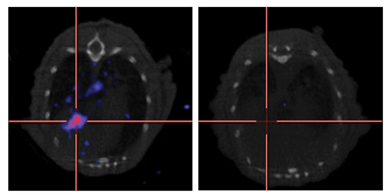RIGVIR is a drug that was approved by the State Agency of Medicines of the Republic of Latvia in 2004. It is wild-type ECHO7, a member of the ECHOVIRUS family. The potential use of ECHOVIRUS as an oncolytic virus to treat cancer was discovered by Latvian scientist Aina Muceniece in the 1960s and 1970s. The data used to register the drug in Latvia is not sufficient to obtain approval to use it in the US, Europe, or Japan. As of 2017, there was no good evidence that RIGVIR is an effective cancer treatment.